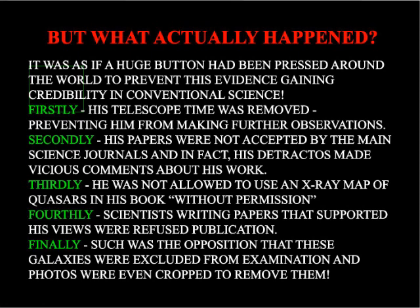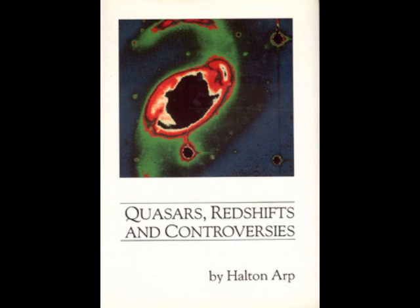Finally, such was the opposition that these objects were excluded from examination and photos were even cropped to remove them. To have academic freedom he moved to Europe, and to bypass these barriers he wrote a book called Quasars, Red Shifts and Controversies, in which he presented his evidence and how he was subsequently treated by orthodox scientists. In a subsequent book, Seeing Red, he gives his views of the opposition he faced.